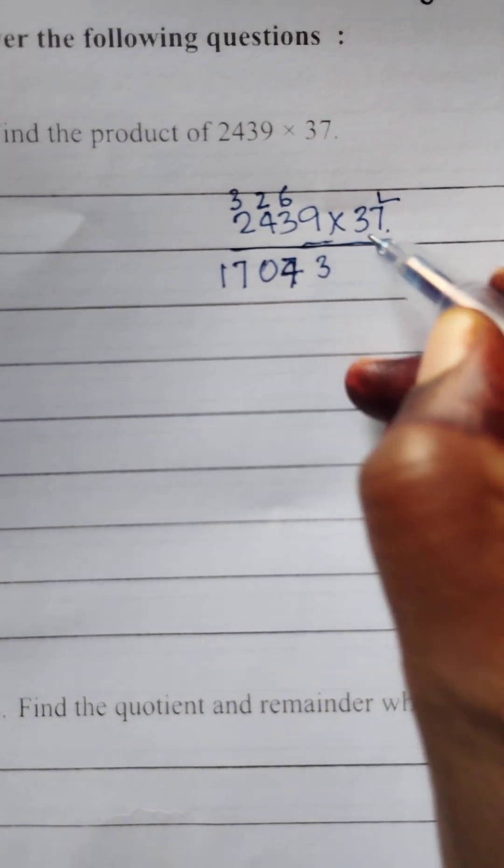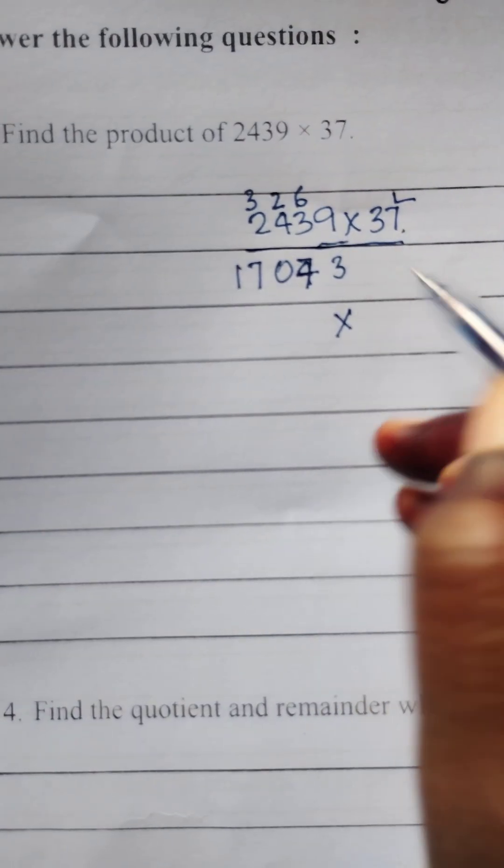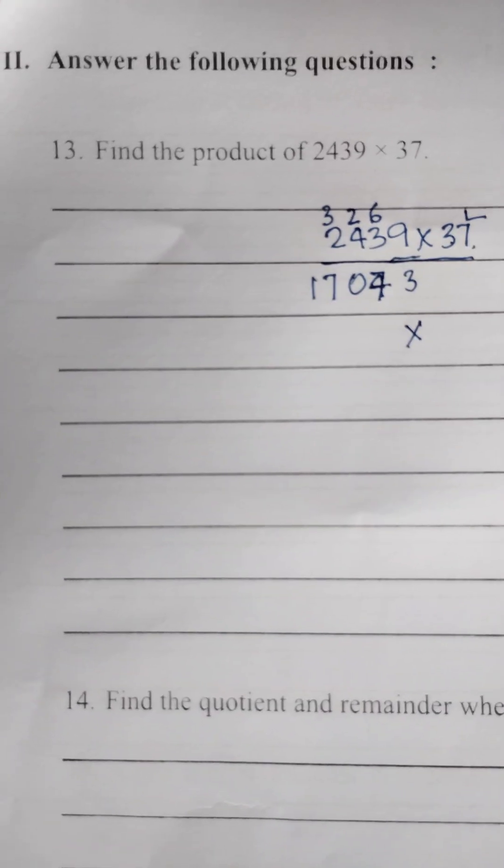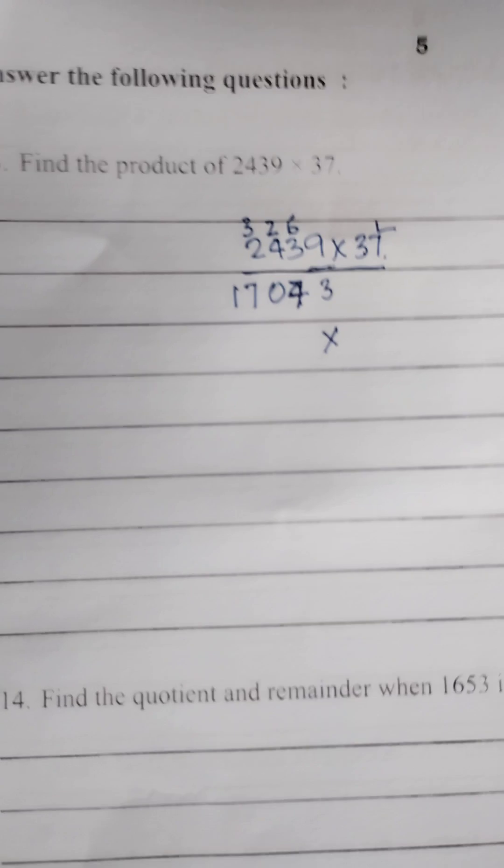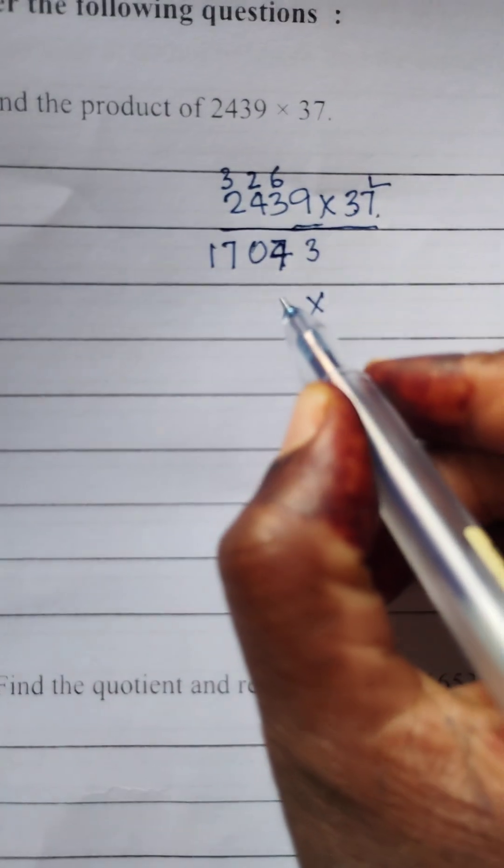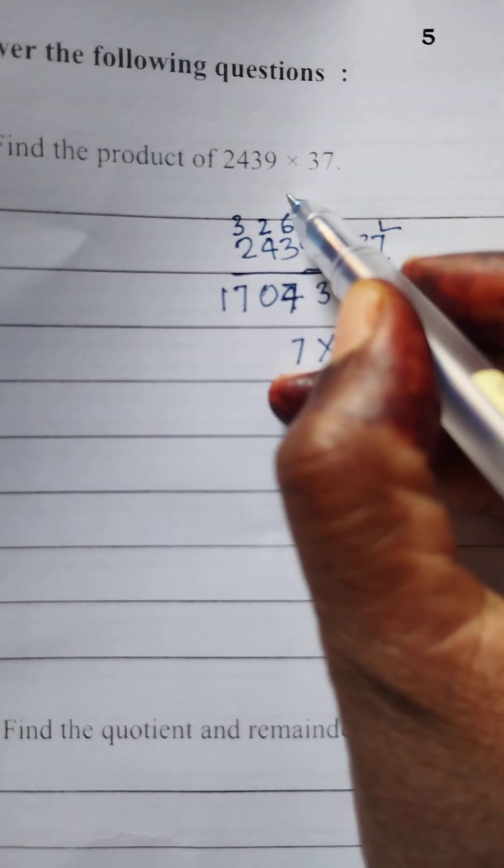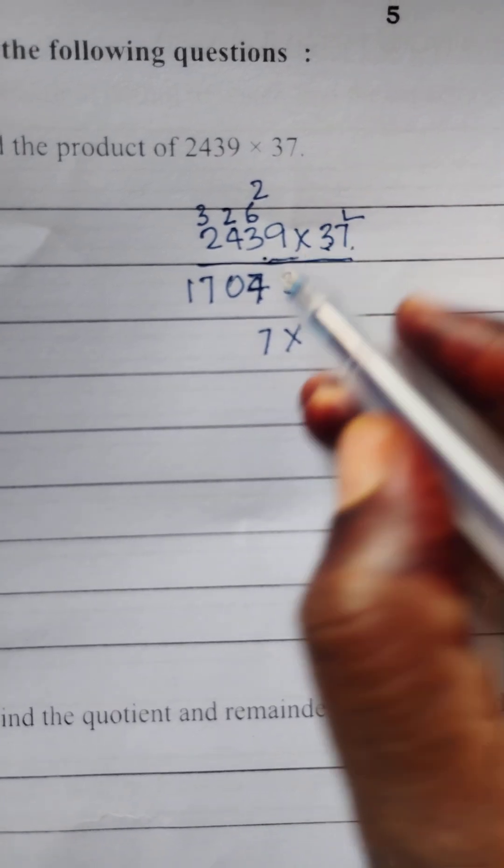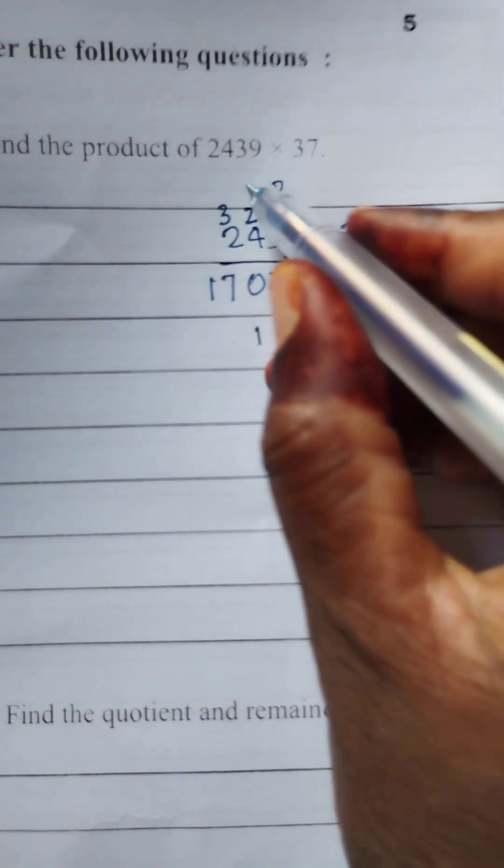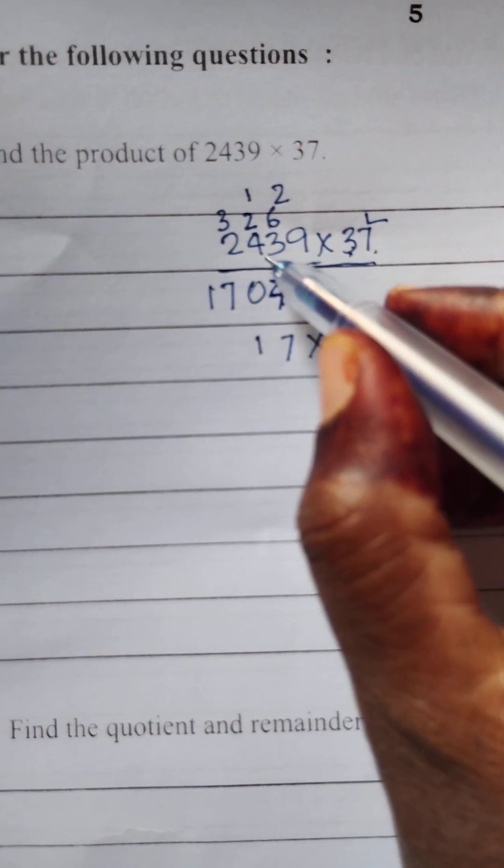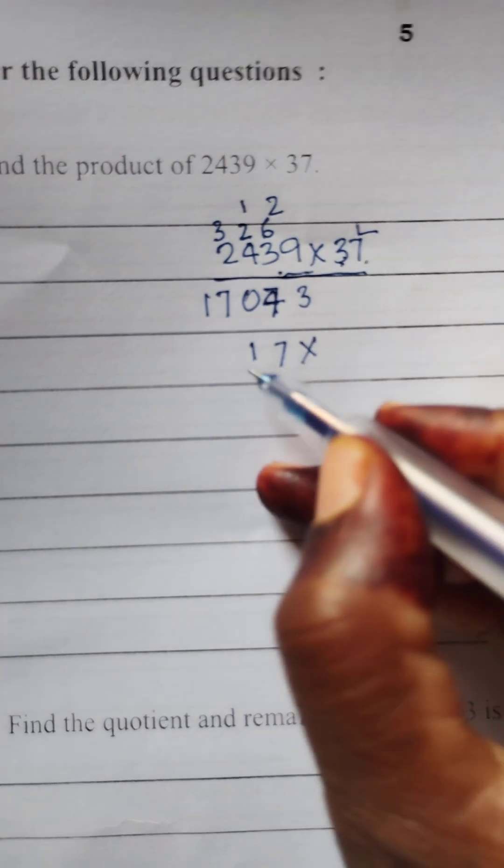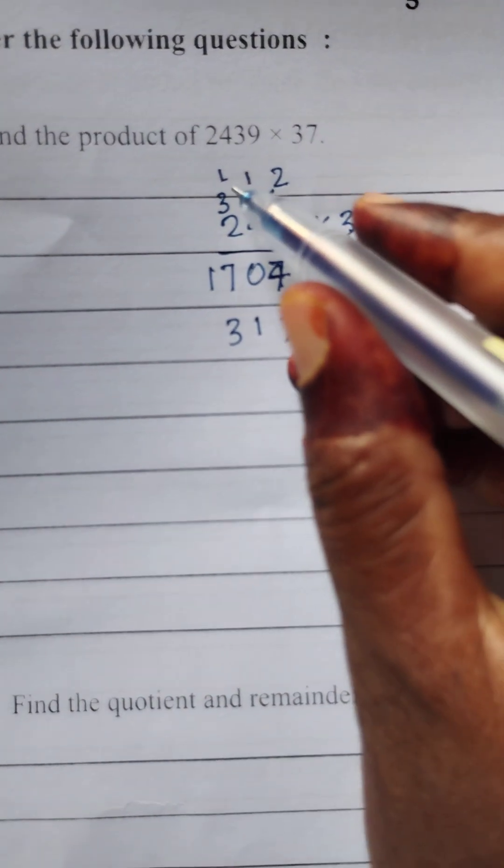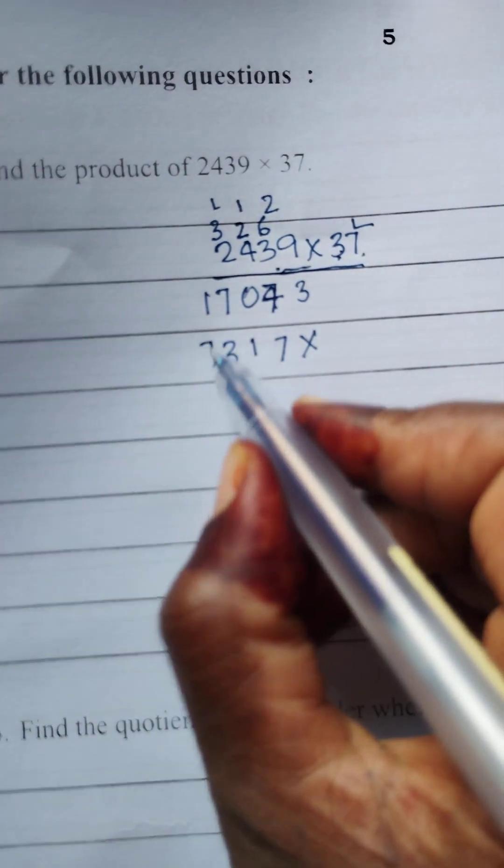Next we have completed 7. Now we have 3. You can leave this digit. Next 3 nines are 27. 7 you can write here. 2 goes to carry. 3 threes are 9. 9 plus 2, 11. 1 goes to carry. Next 3 fours are 12. 12 plus 1, 13. 1 goes to carry. 3 twos are 6. 6 plus 1, 7.